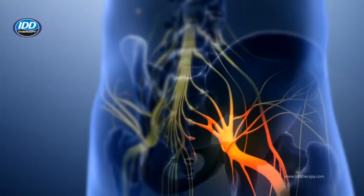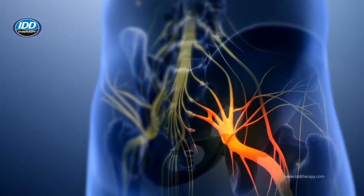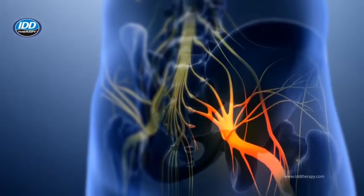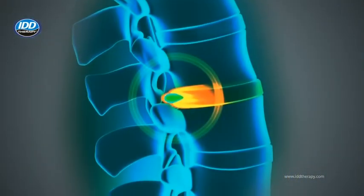The degenerated disc can no longer properly absorb the increased pressure or stress. If the disc base collapses enough to compress a nerve root, radiculopathy or sciatica may also result.